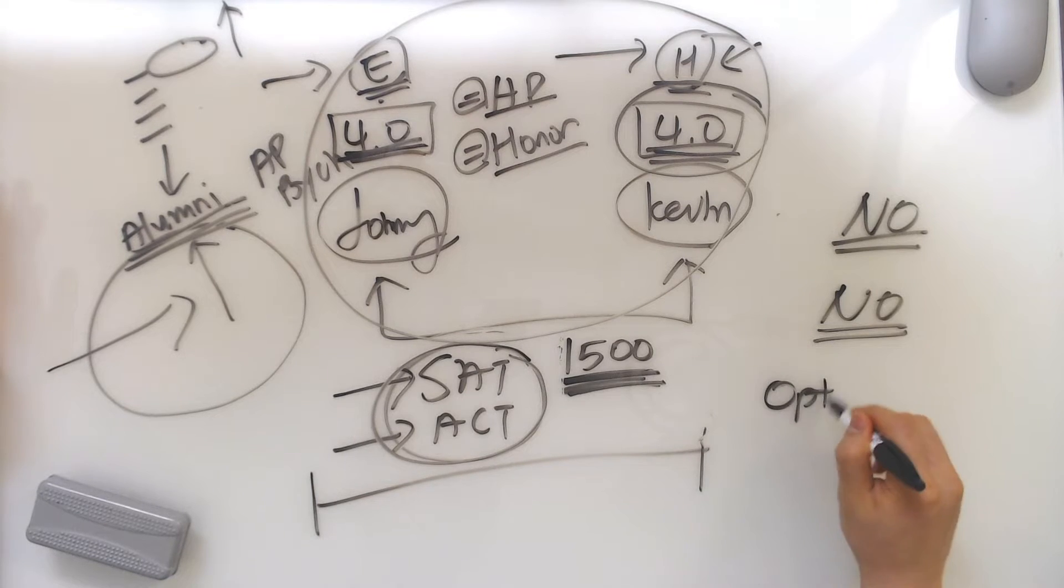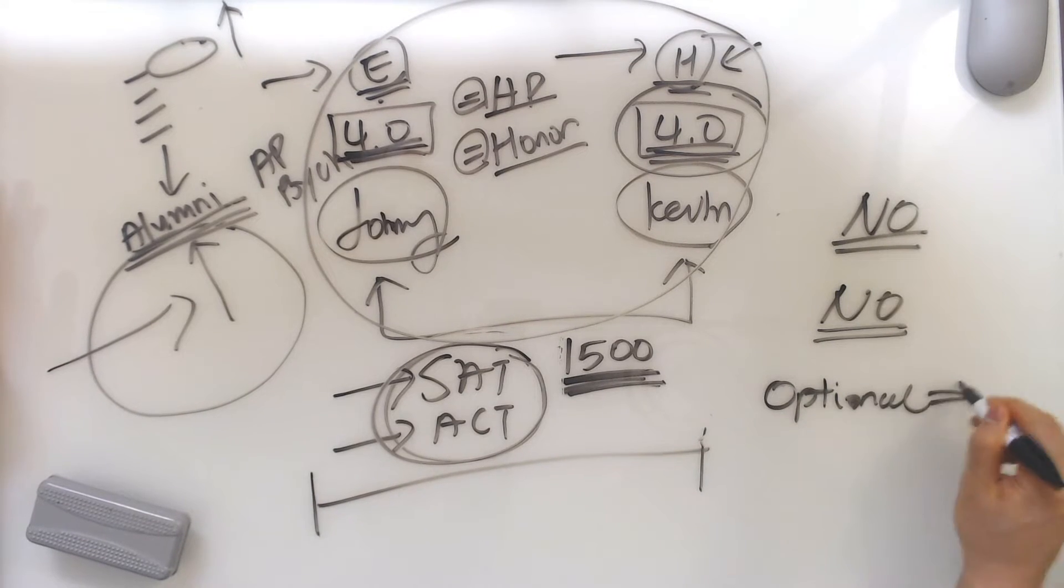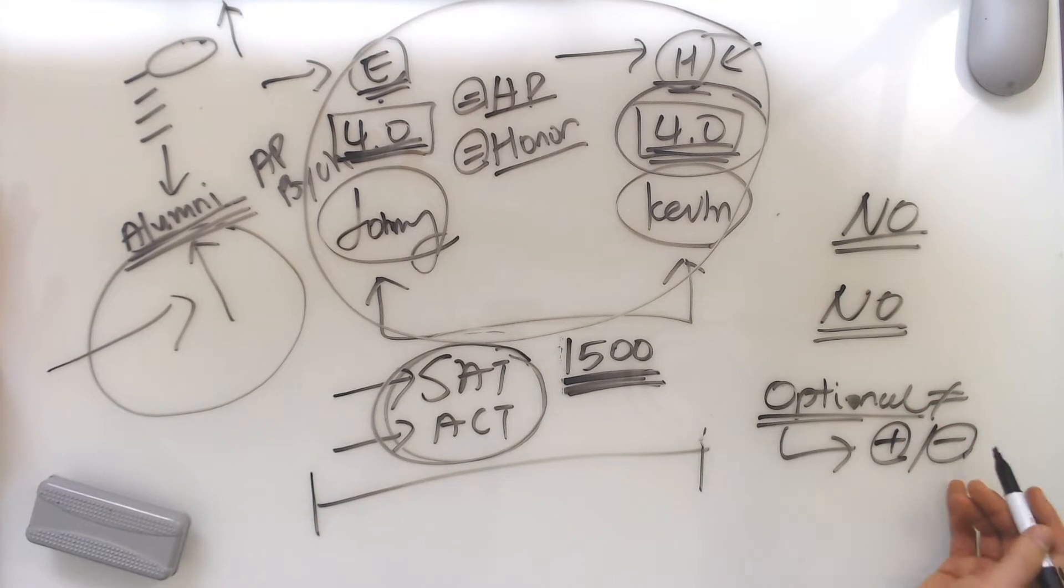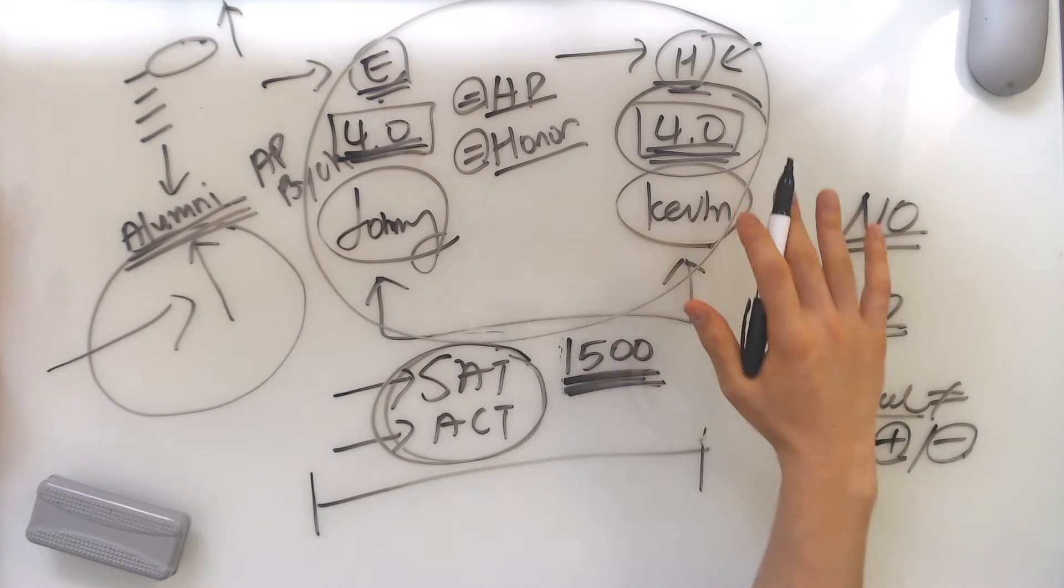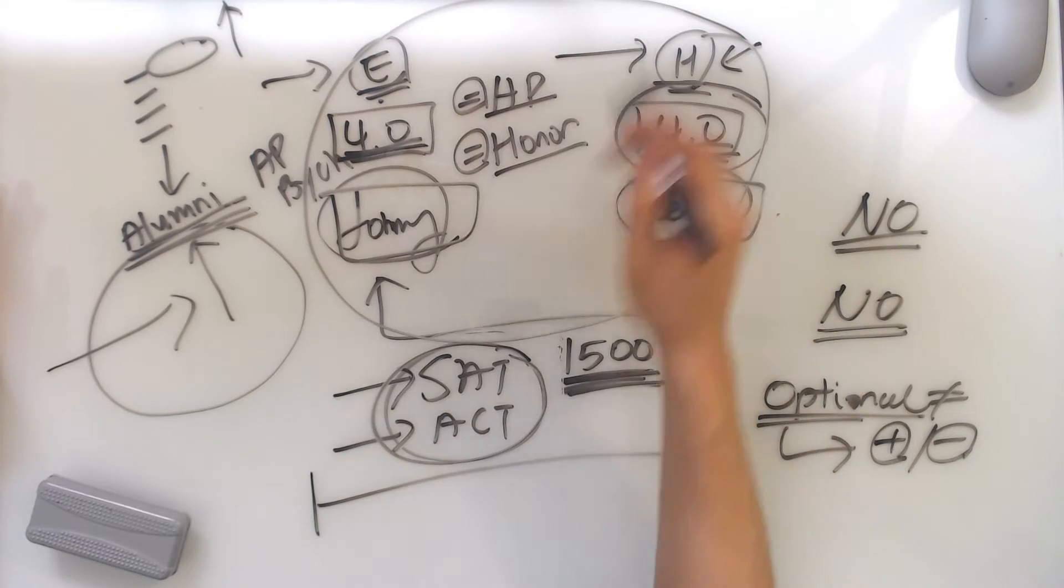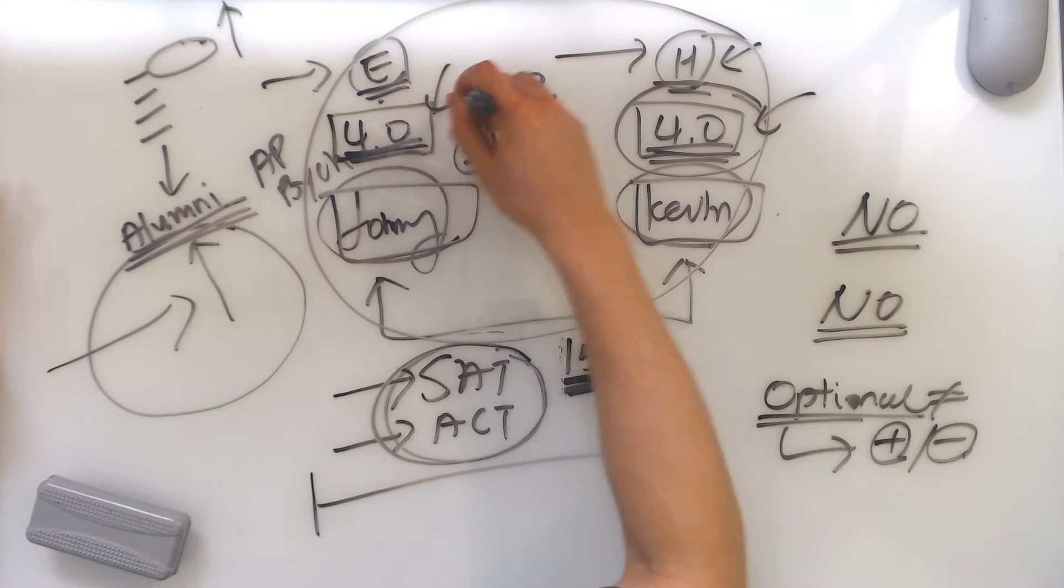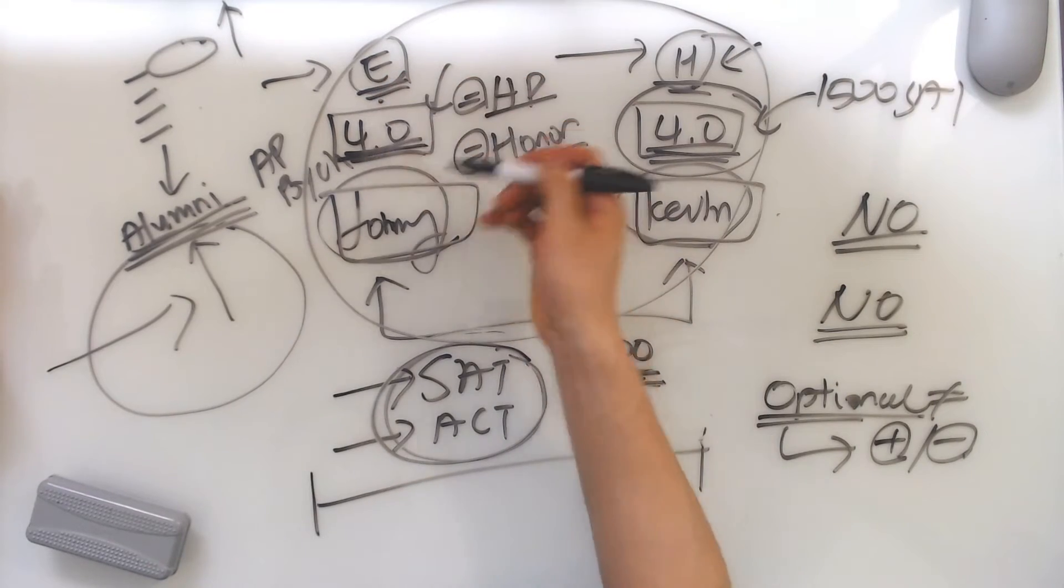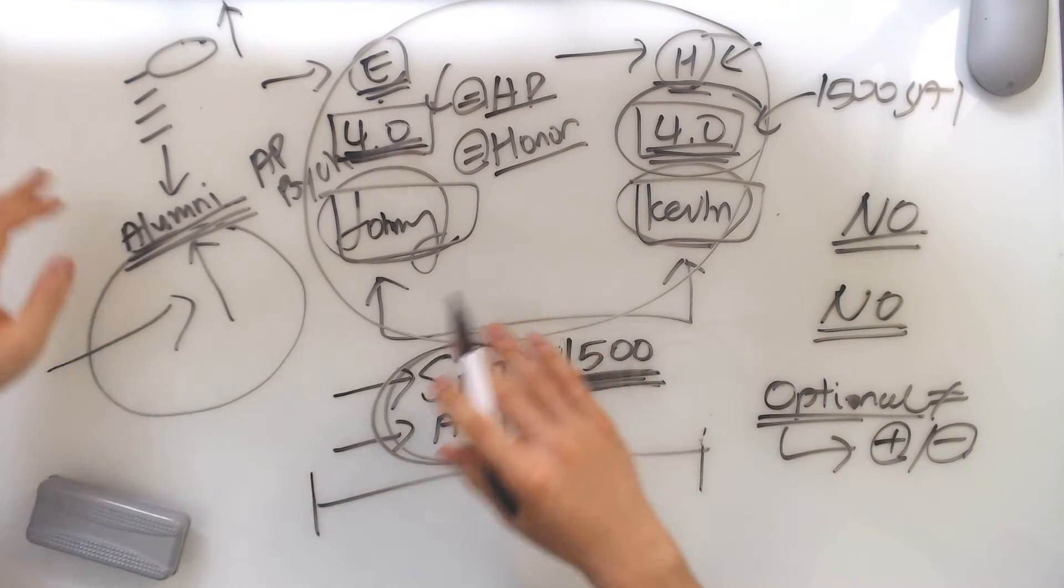See, even though it is optional, optional doesn't mean you don't have to submit the scores. And when you submit your scores, it can only help you. It's not going to hurt you unless your SAT is way, way below the average line of the school you're applying to. For example, when Johnny and Kevin both apply to that school with the exact same stats, and let's say Kevin had a 1500 on the SAT, but Johnny didn't have the SAT score because it was optional. Johnny didn't submit the score.